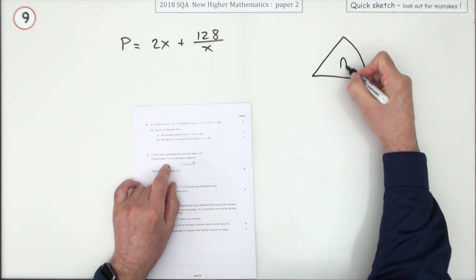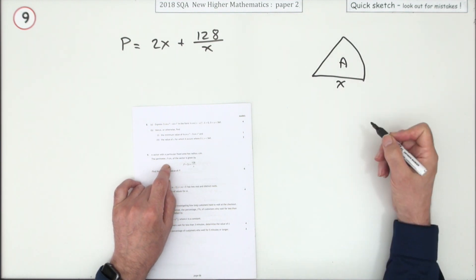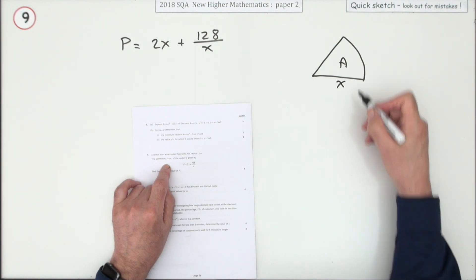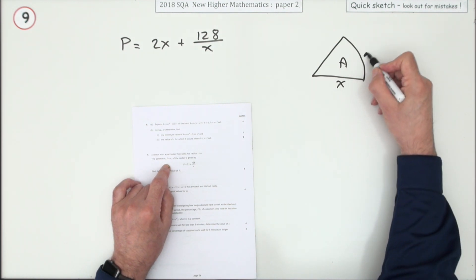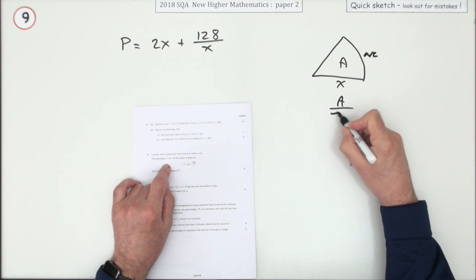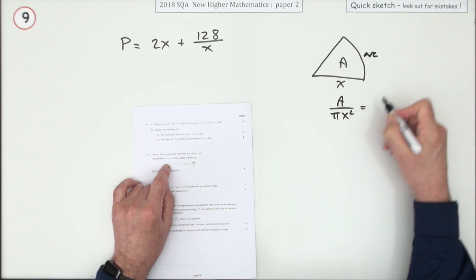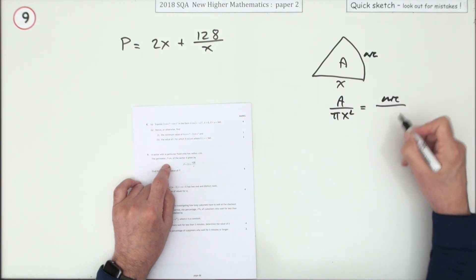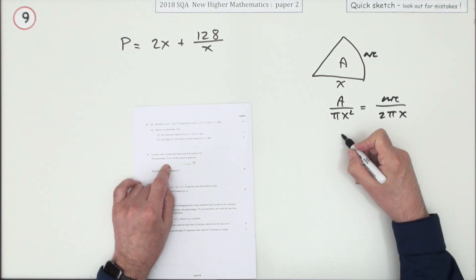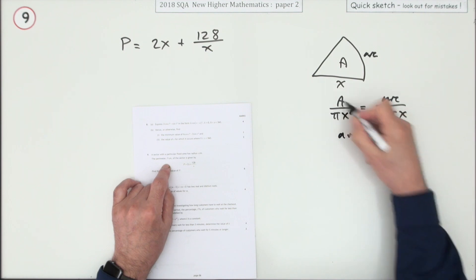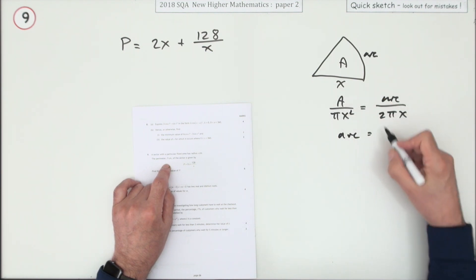So what we got: if there was a sector of a particular fixed area A and you have to get the perimeter, well the connection between area and the arc, first of all, the area over pi and the radius squared would be the arc over two pi r, so it's two pi x. So the arc would be, taking those across, two pi x times A over pi x squared.